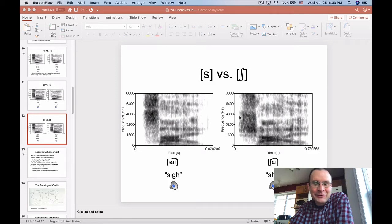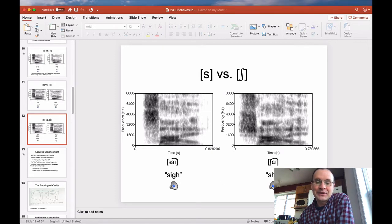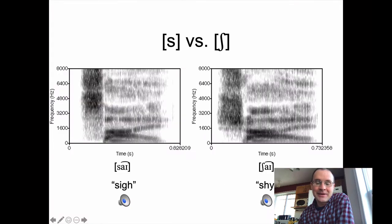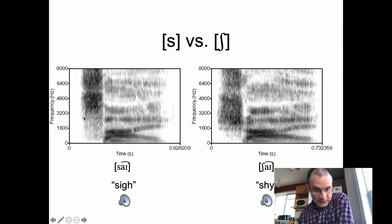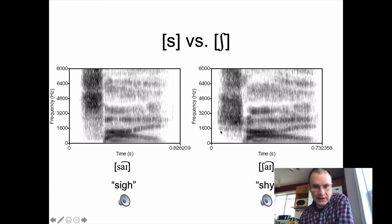We're back with this puzzler of why S and Esch look slightly different but also slightly the same in spectrogram view. S and Esch have a lot of intensity at high frequencies, but the cutoff between high intensity energy and low intensity frequencies for S is much higher on the frequency scale than what we see for Esch.